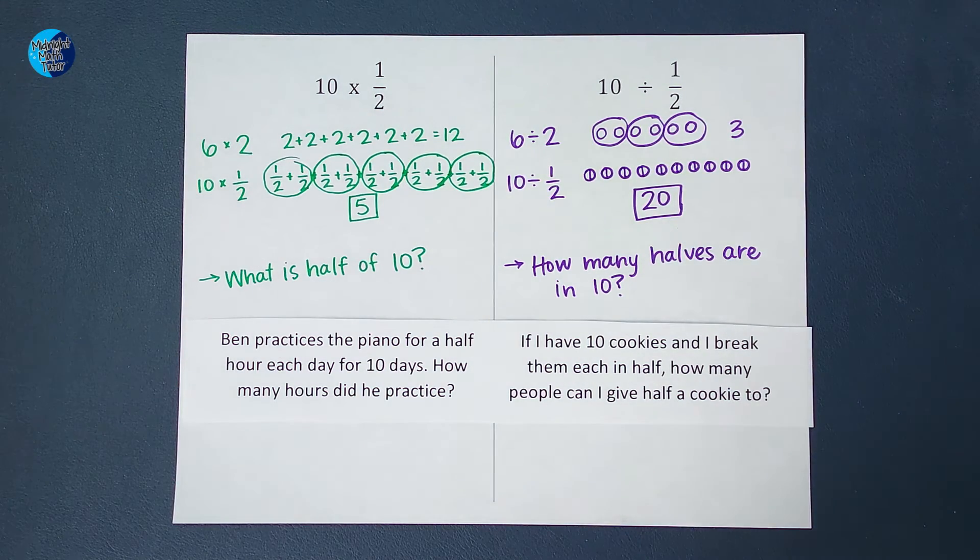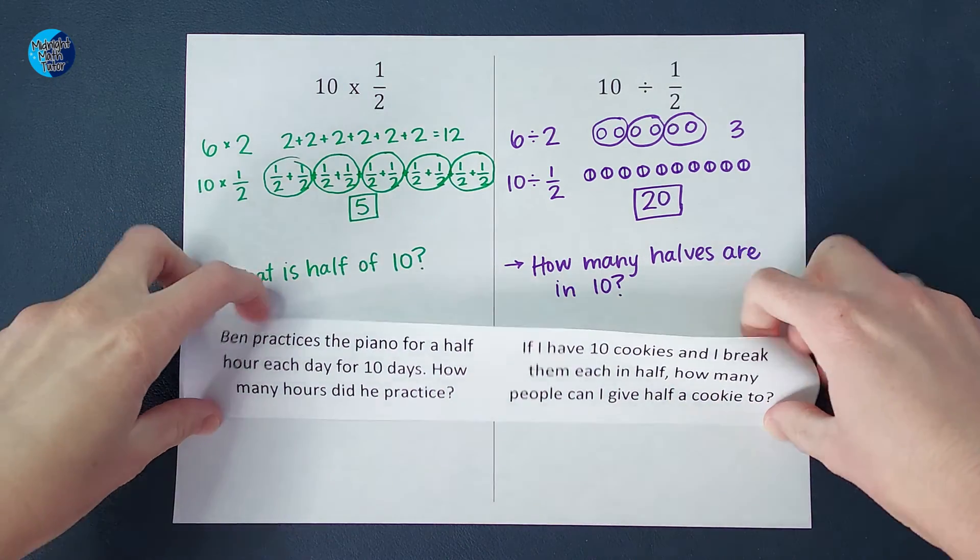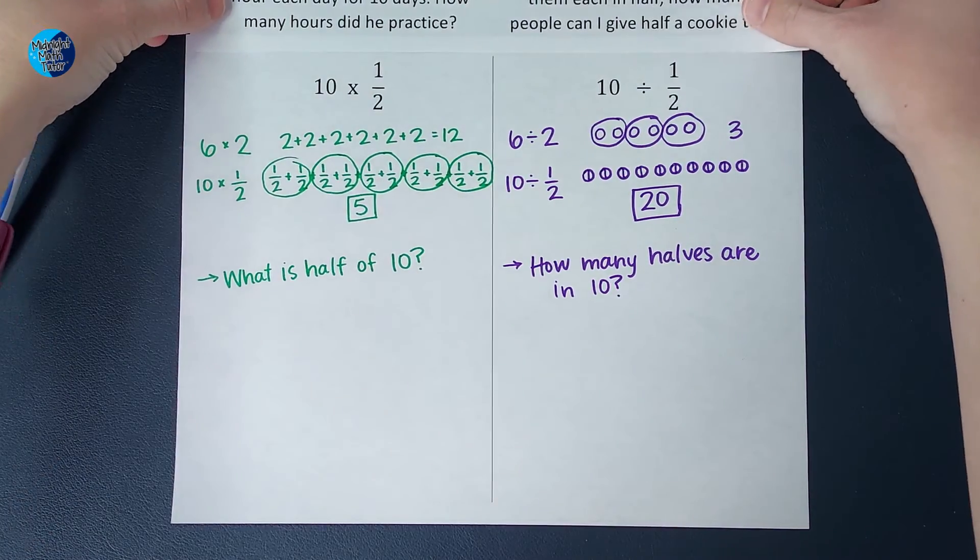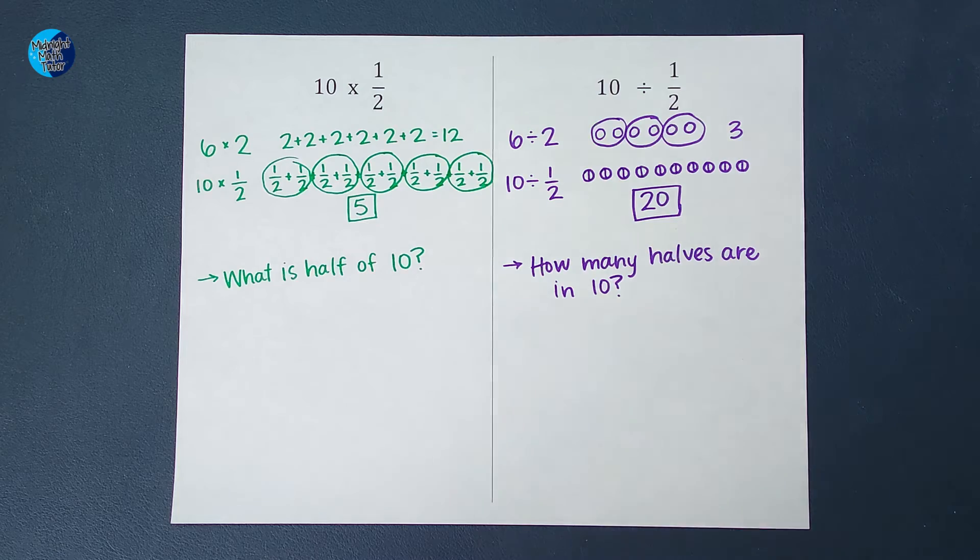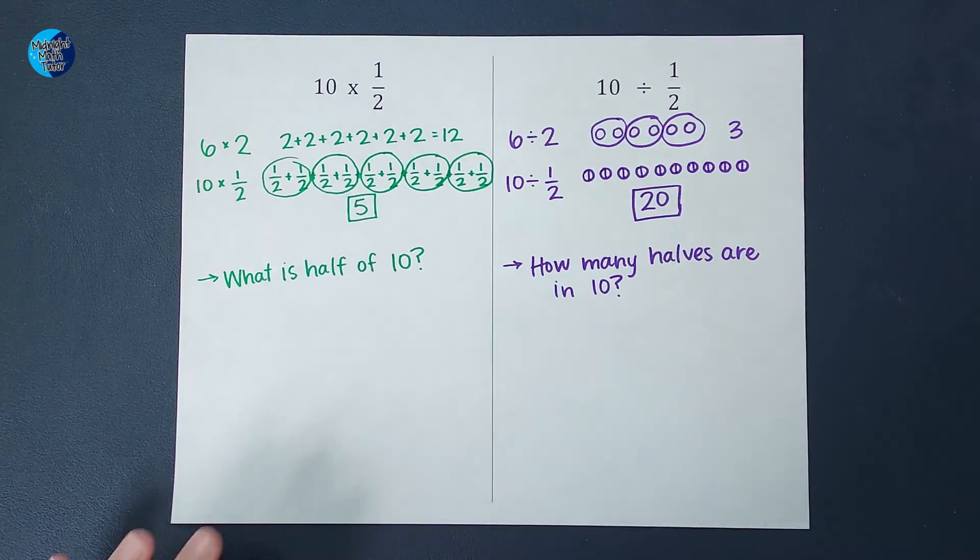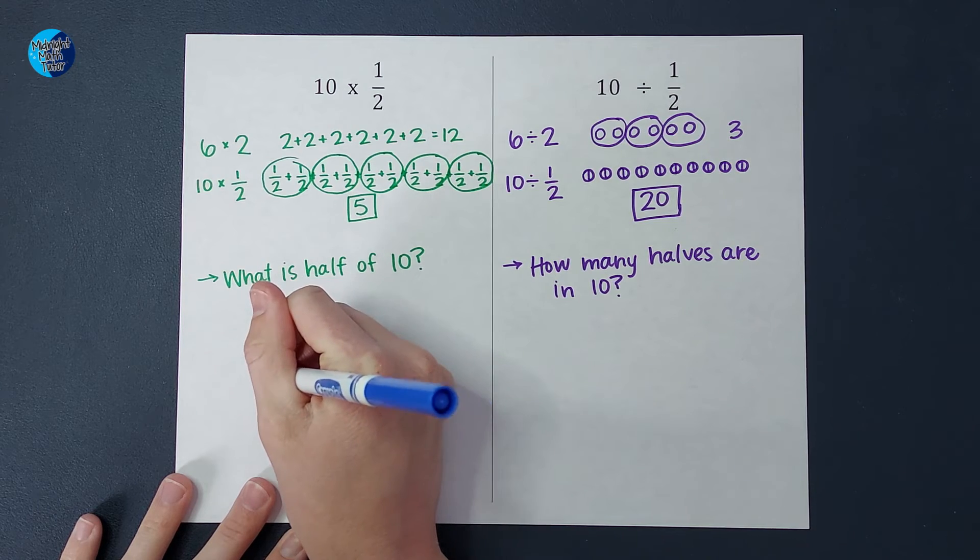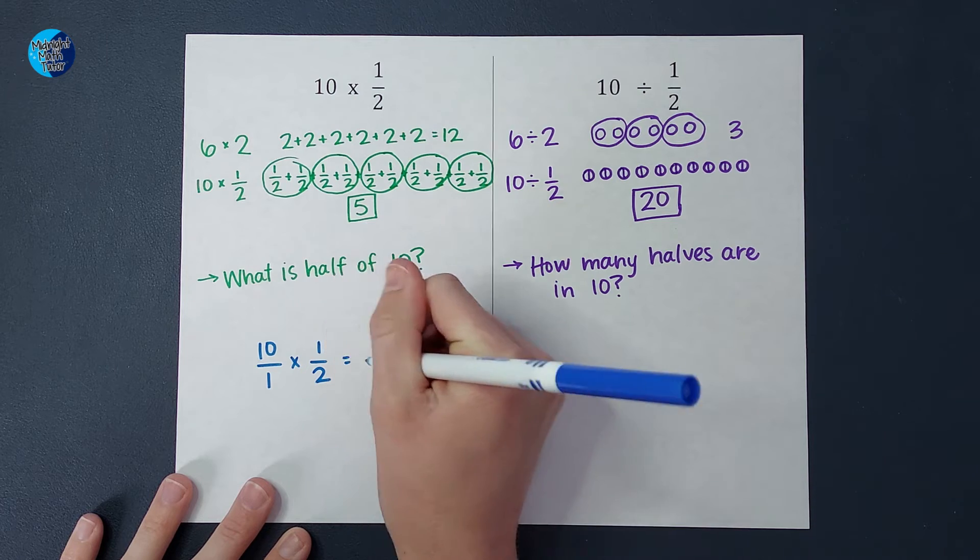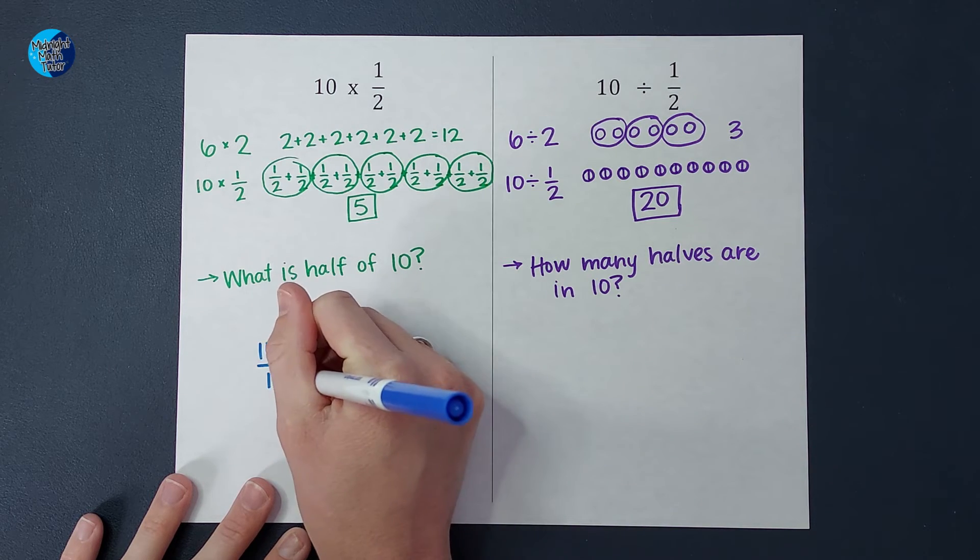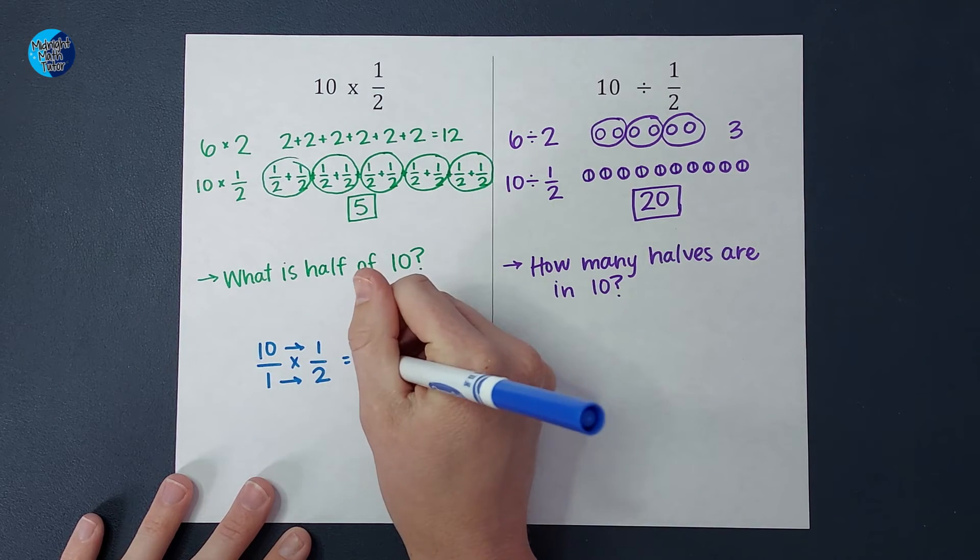Last thing I want to do is I want to make sure that this checks out mathematically, right? The way we've been taught to multiply and divide these. So when I multiply fractions, I'm going to put my 10 over a denominator, which is just one times one half. And when we multiply these, we go ahead and multiply straight across. So 10 times one is 10. One times two is two.